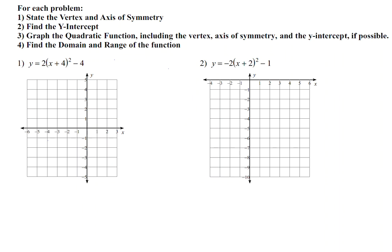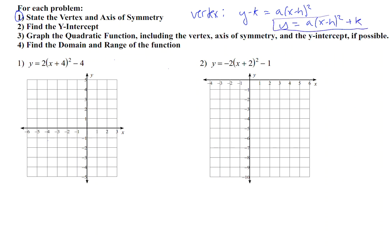You've already been working with quadratic functions — you know how to find the vertex and the axis of symmetry, which is this first part, so let's go ahead and do that and then we'll get into the new material. Remember that your vertex form for your quadratic function is y minus k equals a times (x minus h) quantity squared, or sometimes we add the k to both sides, in which case it would be y equals a times (x minus h) squared plus k. That's the vertex form for our quadratic function.